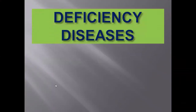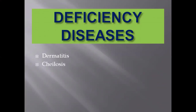Now let's talk about the deficiency diseases. Riboflavin deficiency is not associated with a major human disease on its own, but when this deficiency is combined with another vitamin deficiency, some symptoms appear. The first is dermatitis — inflammation of the skin. The second is chelosis — fissuring at the corners of the mouth, caused by riboflavin deficiency.